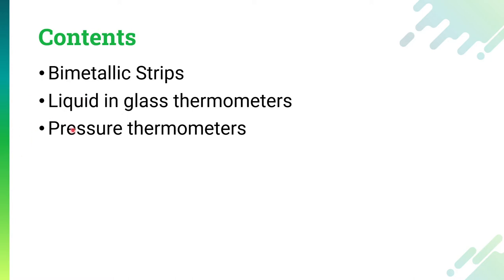The bimetallic strip uses the solid expansion principle — the solid material will expand when temperature changes. The liquid-in-glass thermometer uses the liquid expansion principle, and the pressure thermometer uses the fluid expansion principle, meaning it can involve liquid, vapor, and gases. So the pressure thermometer uses all three. Let us start with the very first one: the bimetallic strips.